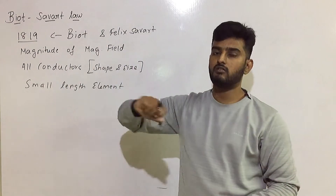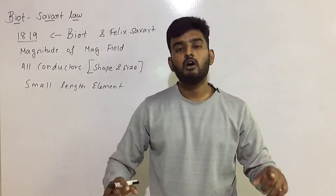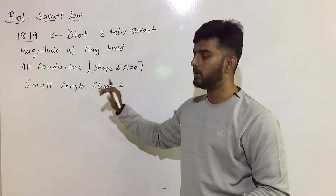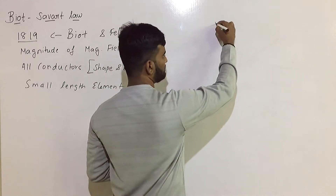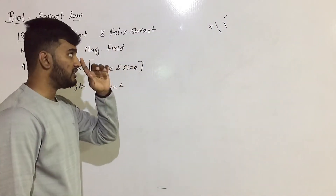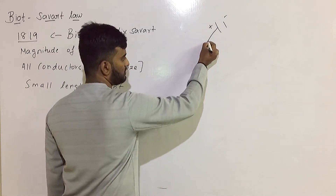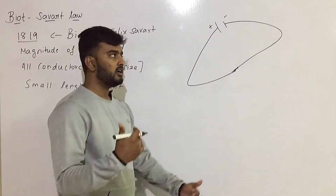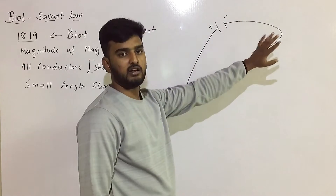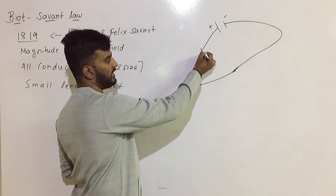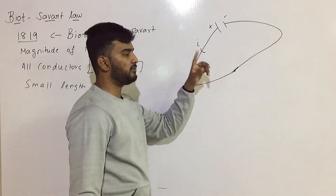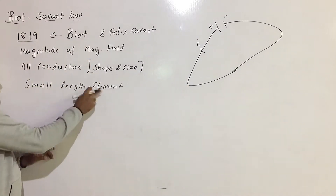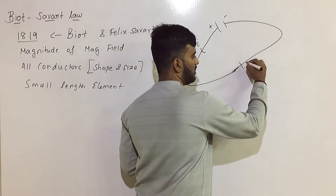We can use Bio-Savart Law by choosing a small length element of the whole conductor. First, we have a battery connected to a conductor — a wire. On this conductor, there is a current flowing. We choose a small length element dL of the conductor.